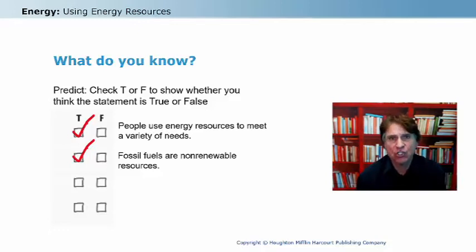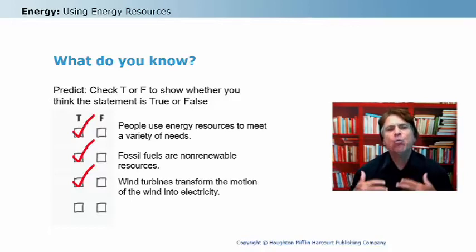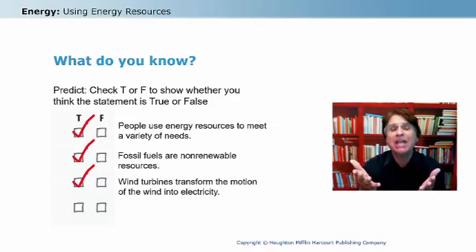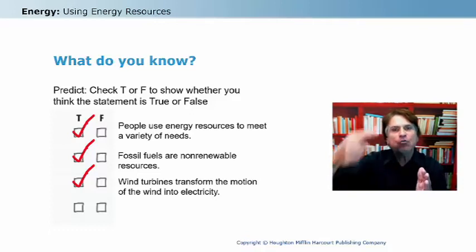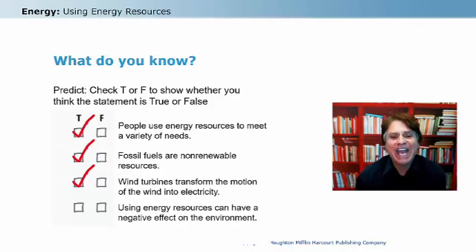Later in this lesson, we'll look at the differences between renewable and non-renewable energy resources. Next statement: wind turbines transform the motion of the wind into electricity — and that is true. Energy can change from one form to another. A wind turbine harnesses that sideways movement of air and transforms it using a turbine and a generator to produce electricity. And the final statement: using energy resources can have a negative effect on the environment — and that can be true.